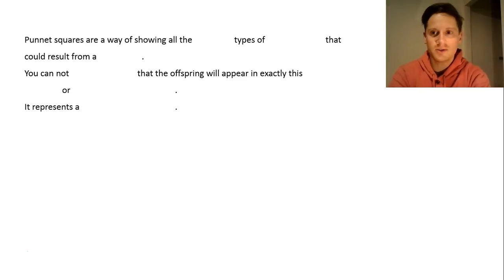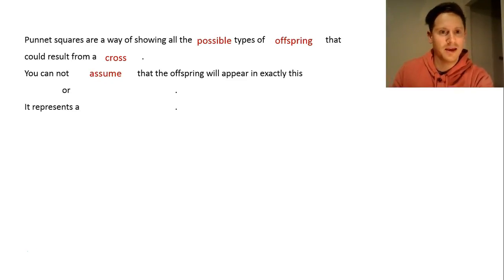This is in your notes document, so please fill this in. Punnett Squares are a way of showing all the possible types of offspring that could result from a cross, so the breeding of any living organism. Now you cannot assume that the offspring will appear exactly in this order or in the exact ratio that we prescribed. It represents a probability.